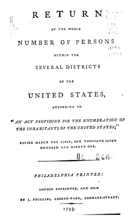In 1997, OMB issued a Federal Register Notice regarding revisions to the standards for the classification of federal data on race and ethnicity. OMB developed race and ethnic standards in order to provide consistent data on race and ethnicity throughout the federal government. The development of the data standards stemmed in large measure from new responsibilities to enforce civil rights laws.